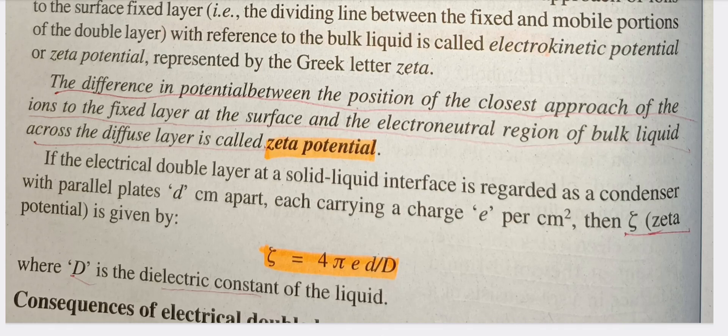What is the potential difference? The potential difference between the fixed layer and the diffuse layer is the zeta potential. The symbol for it is zeta (ζ), and the formula is: zeta equals 4πed divided by D.